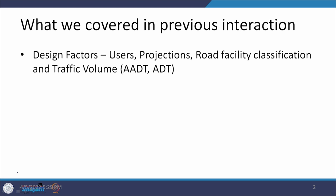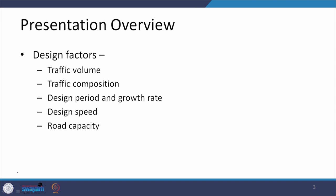We then moved into the road-related factors. The very first thing we discussed was classification of roads, and under traffic volume, two things we talked about: one was AADT and another was ADT. Today we are going to cover the rest of the things in traffic volume, traffic composition and its effect, the design period and design growth rate, the design speed, and road capacity.